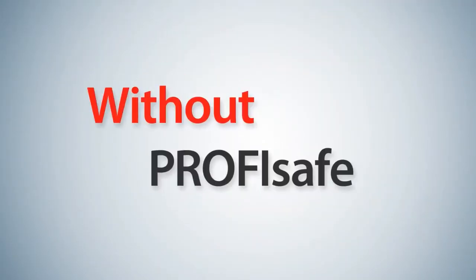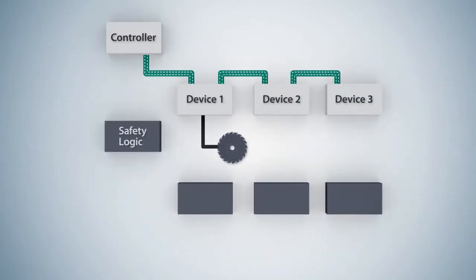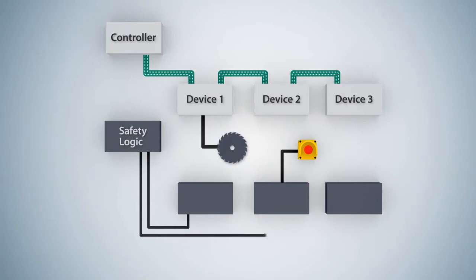An example using conventional safety technology. In addition to the actual automation devices, a safety logic with additional hardware in the form of contactors or relays is configured in parallel.